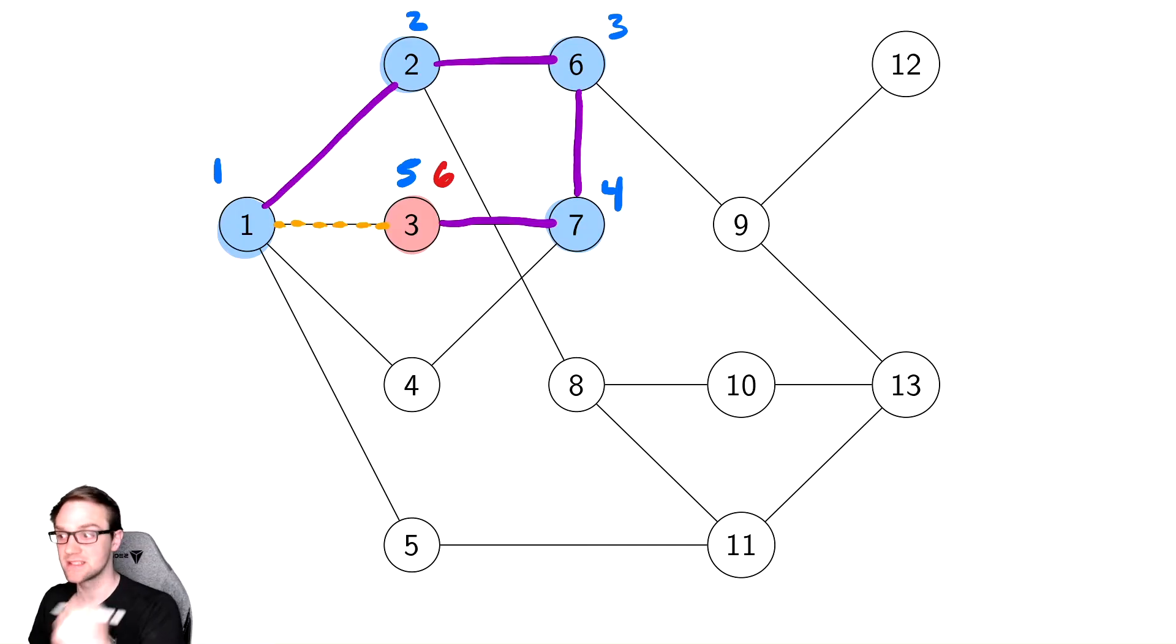Once we finish 3, what happens? This is a recursive algorithm, so it backtracks along this edge until it gets to 7, and then it will keep proceeding from there if there's anywhere new to go. From 7, I can still go down to 4. So we'll go down to 4. 4 is now discovered. The time keeps getting updated, so the discovery time there is 7.